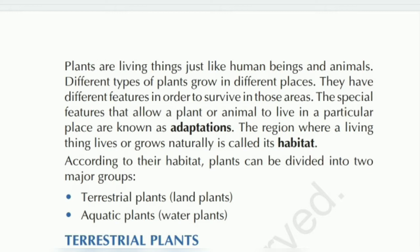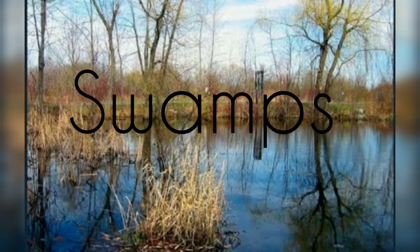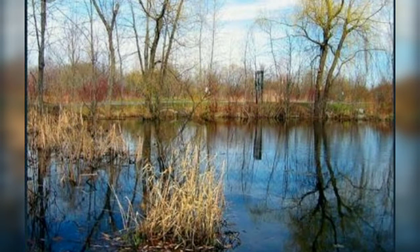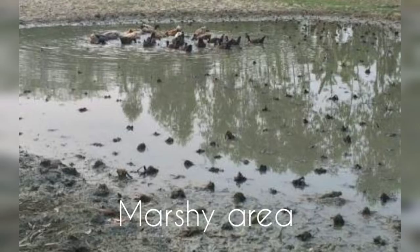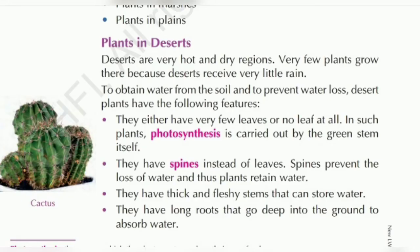So let us see what are the different categories in terrestrial plants. Hamara landscape dekhe to pata chalega it is different in every region — in some areas we can find deserts, in some other regions there will be hills, marshes — marshes matlab swamp, jaise ki chhaad ki tarah, poora clayey and sticky soil hojayegi — then plain areas. So in all these landscapes we can find different types of plants. We are dividing terrestrial plants into: plants in desert, plants in hills, plants in marshes, and plants in plains.